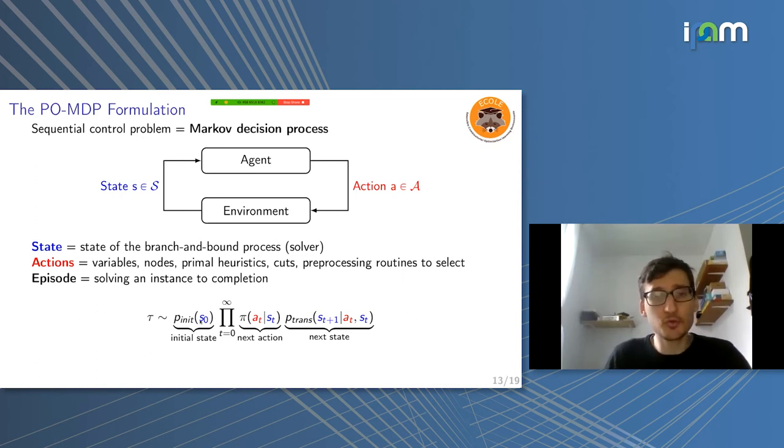Then you have a transition probability in this MDP, how to go from one state to the next, given that you take an action. This is also handled by the solver and by Ecole. When you have Ecole, the only thing you have to implement is this policy, how to take an action given a state. And that's it. And really, Ecole tries to follow this formulation as close as possible.